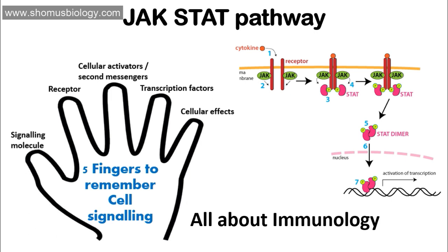The first parameter is the signaling molecule, and in the case of JAK-STAT, the signaling molecule is cytokine. The second important parameter is the receptor. The receptor's name is easy to remember because it's always linked with the name of the signaling molecule — so here it's the cytokine receptor, also called the chemokine receptor, though there is a difference between chemokine and cytokine.